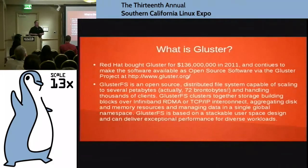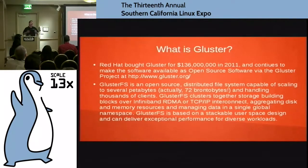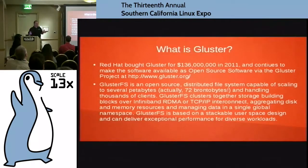The cool thing about Gluster is it scales — it scales ridiculously large. You're going to run into laws of physics problems, like literally being able to have enough bandwidth, enough cabling and things like that. You're going to run into problems with your infrastructure long before you run out of namespace with Gluster. It's super big and also really flexible. If you interconnect your systems with just plain old gig ethernet, that works fine. You can do this over TCP. If you use something like InfiniBand, you can do this over RDMA as well. When you start talking RDMA, you're talking about direct memory access — it's silly fast.